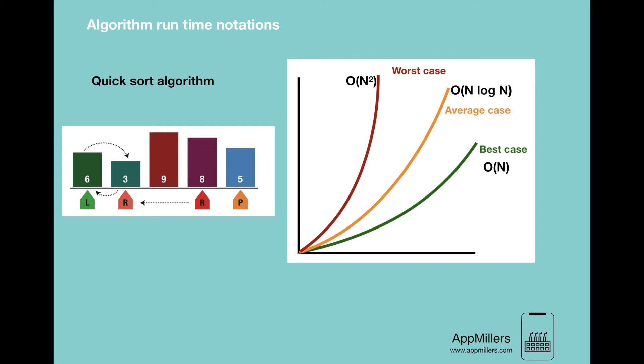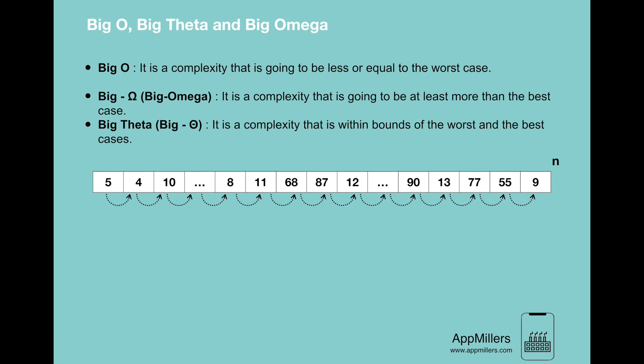Now, to express different scenarios of an algorithm, there are three different Big O notations. The first one is Big O. It's a complexity that is going to be less or equal to the worst case. For example, if we want to sort 1000 numbers, Big O measures the maximum time we need for this sorting. Let's say we need maximum 10 seconds to execute this algorithm. This means that the execution will never exceed 10 seconds. It can be 8 or 9 seconds, but it will never be more than 10 seconds in case of Big O notation.